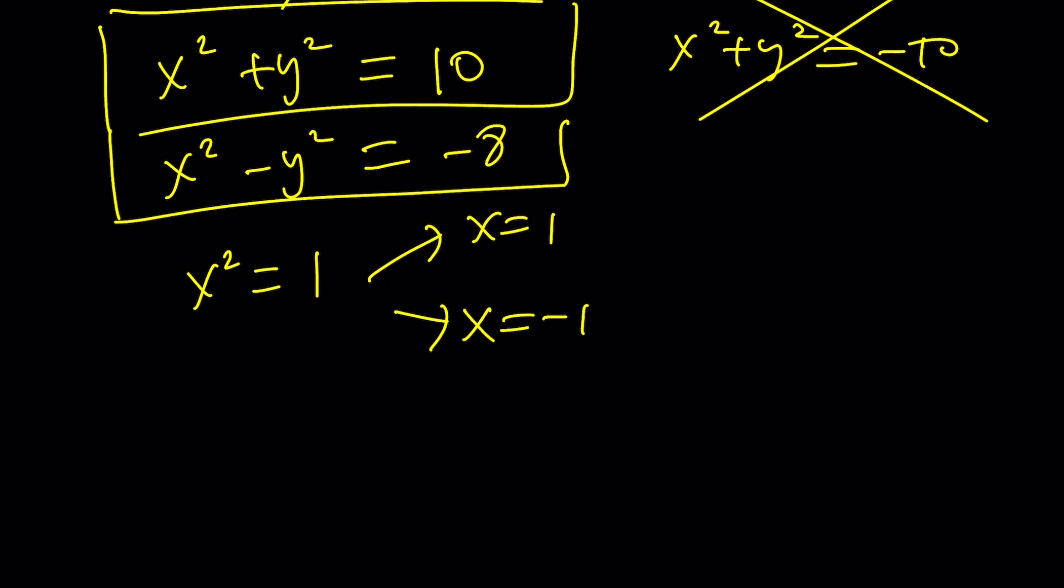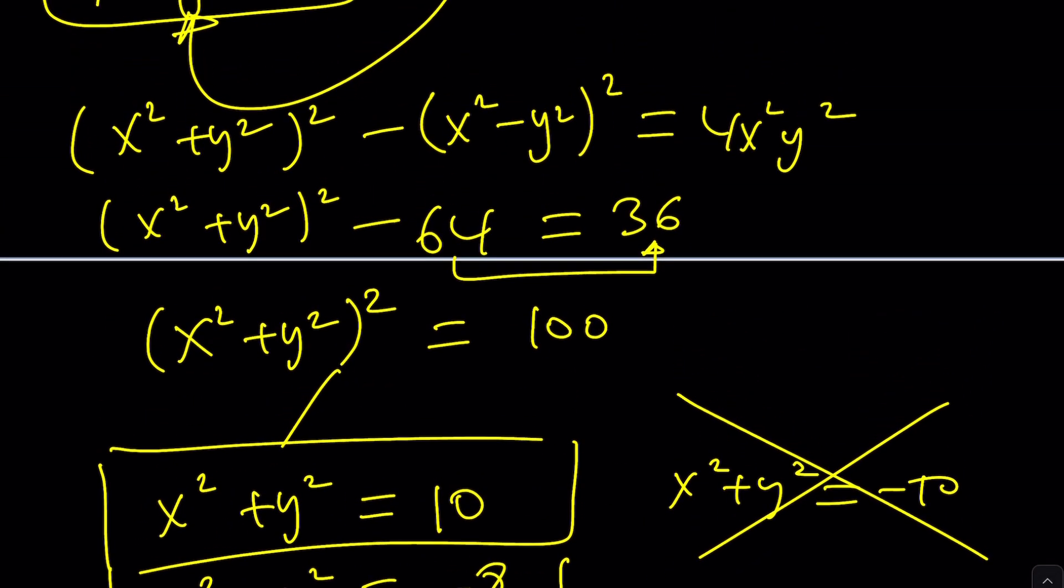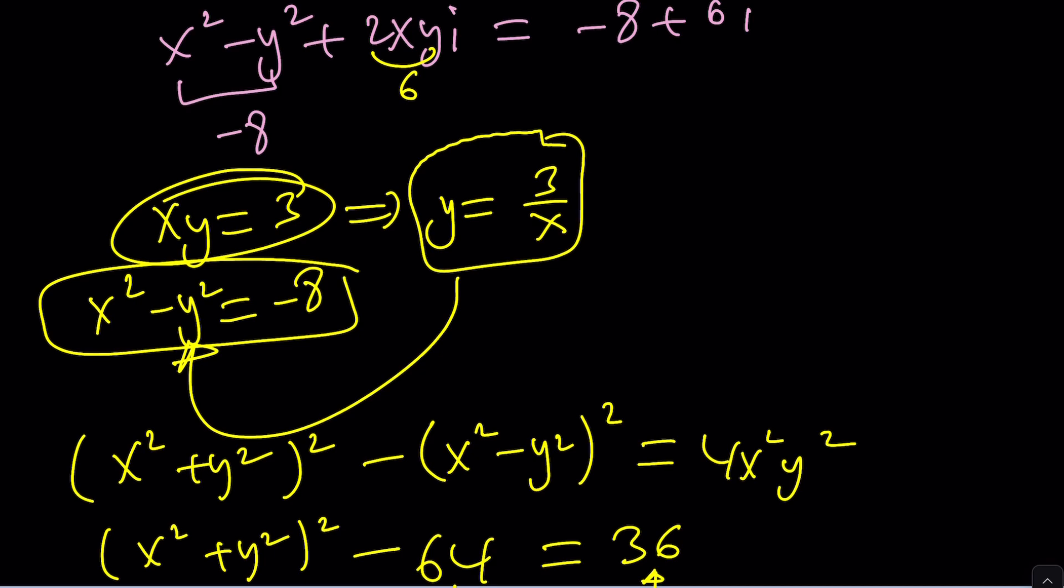One, 10 minus one is nine. y can be three or negative three. But wait a minute. When x is one, we got to be careful because we have another equation that we need to use. xy is three.